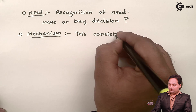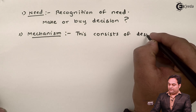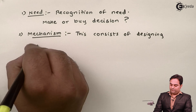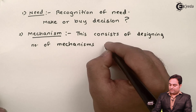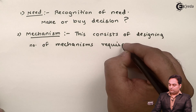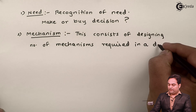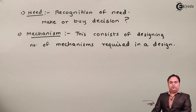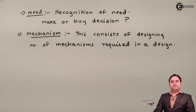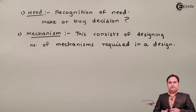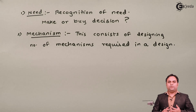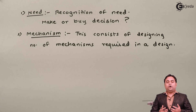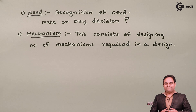The second step is mechanism. Mechanism refers to the number of mechanisms required in a design. Basically, it is like the skeleton of a machine — it shows how the internal working of a machine is structured. In this step we decide how many mechanisms are required and how many links or elements are needed.